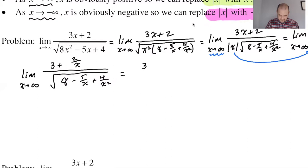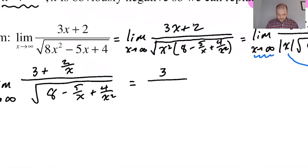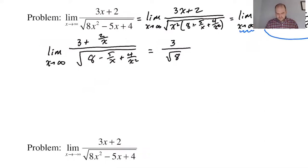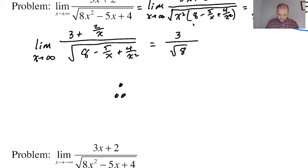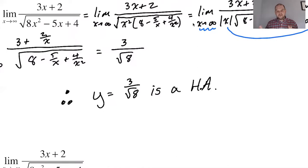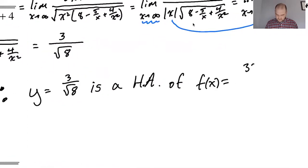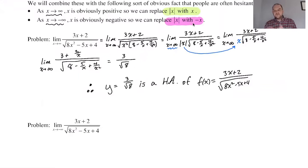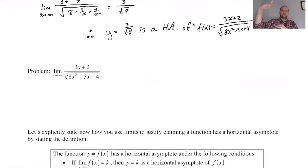If we go to infinity, we get 3 plus 0 over the square root of 8, which is 3 over radical 8. Therefore y equals 3 over radical 8 is a horizontal asymptote of f(x) = (3x + 2) / √(8x² − 5x + 4). So we just found a horizontal asymptote.